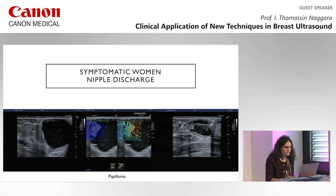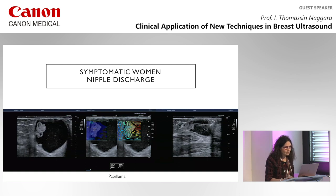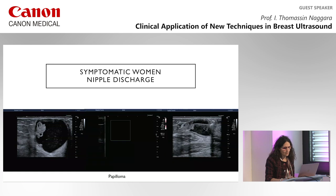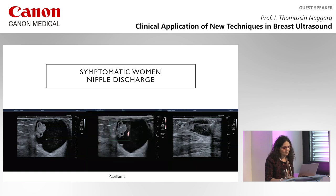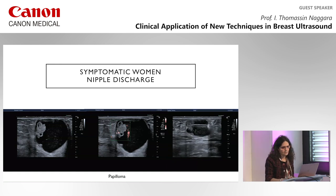Here is an example of a patient referred for nipple discharge. There is a beautiful cyst with a papillary projection. Elastography is not so good for this type of lesion. We performed SMI and could see the flow inside — not so much flow. The first hypothesis was papillary carcinoma, but biopsy confirmed it was a benign papilloma.